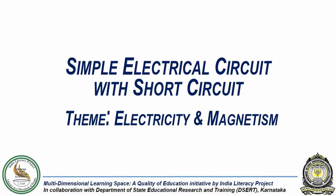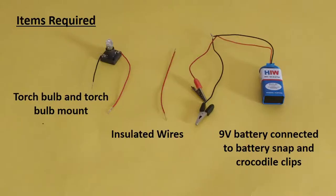In this experiment, we will understand what a short circuit is. For this we will need a torch bulb and a torch bulb mount, insulated wires, a 9-volt battery connected to battery snap and crocodile clips.